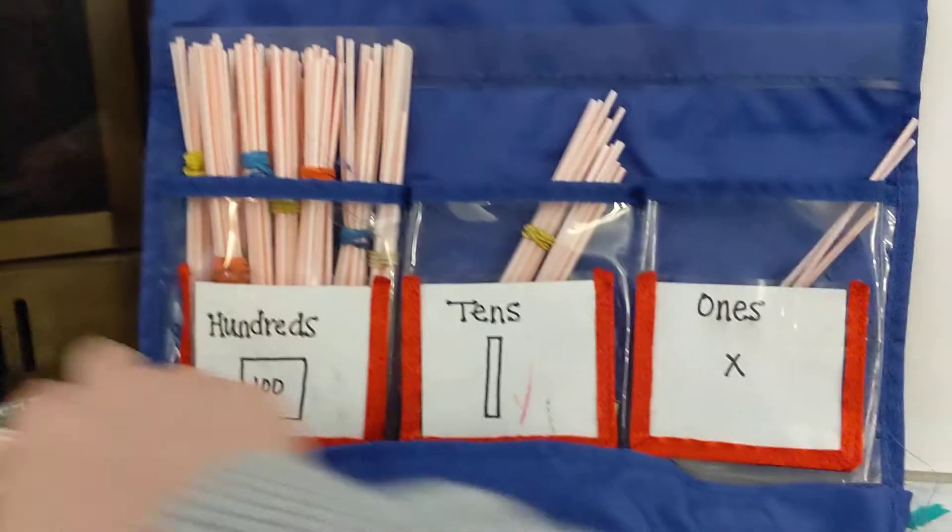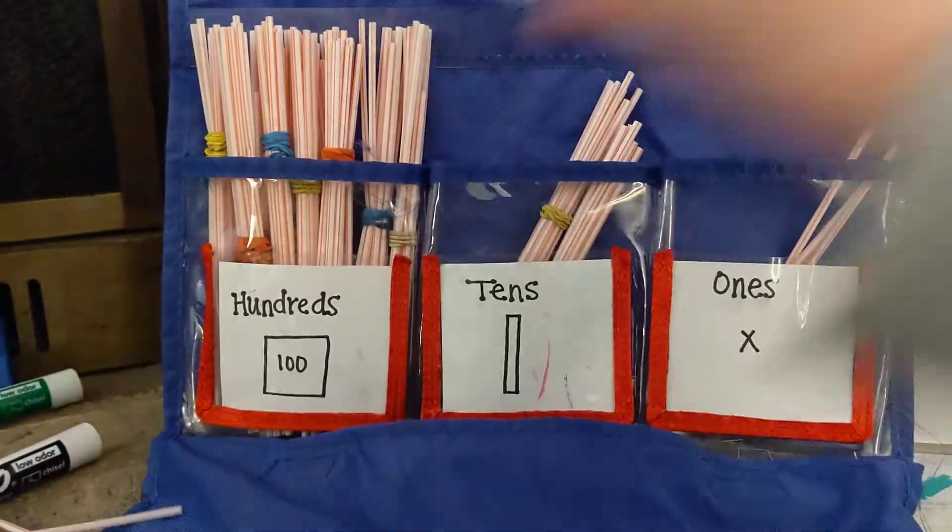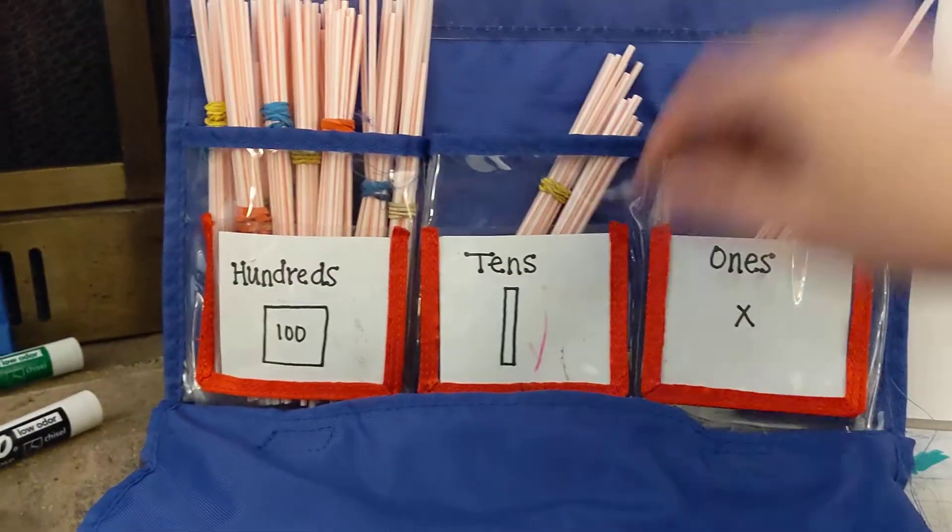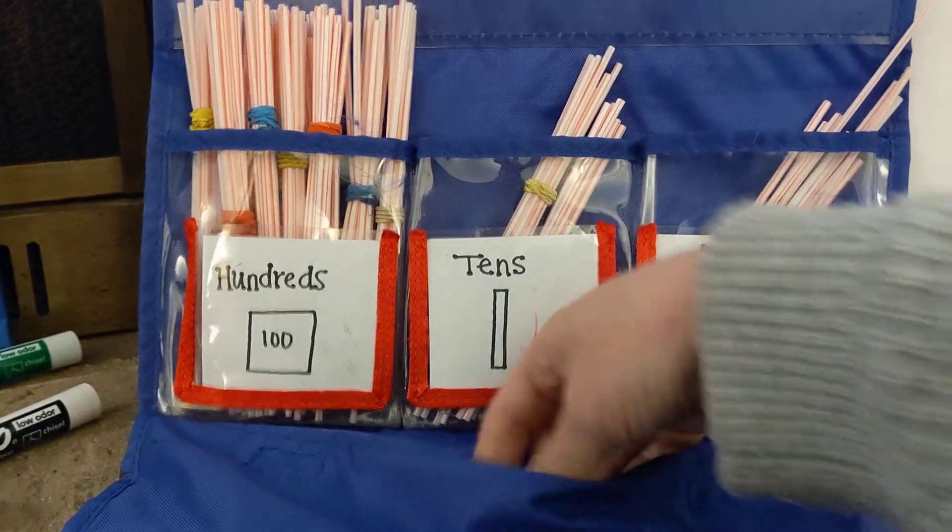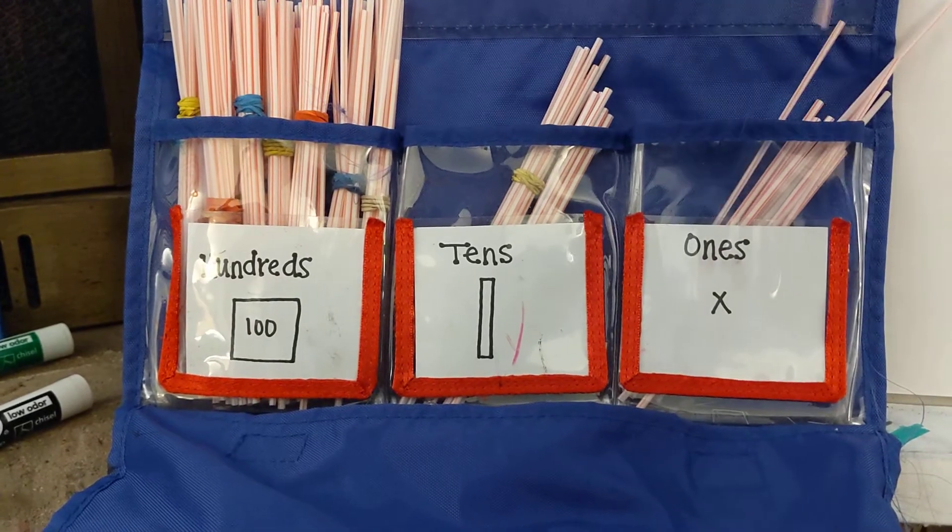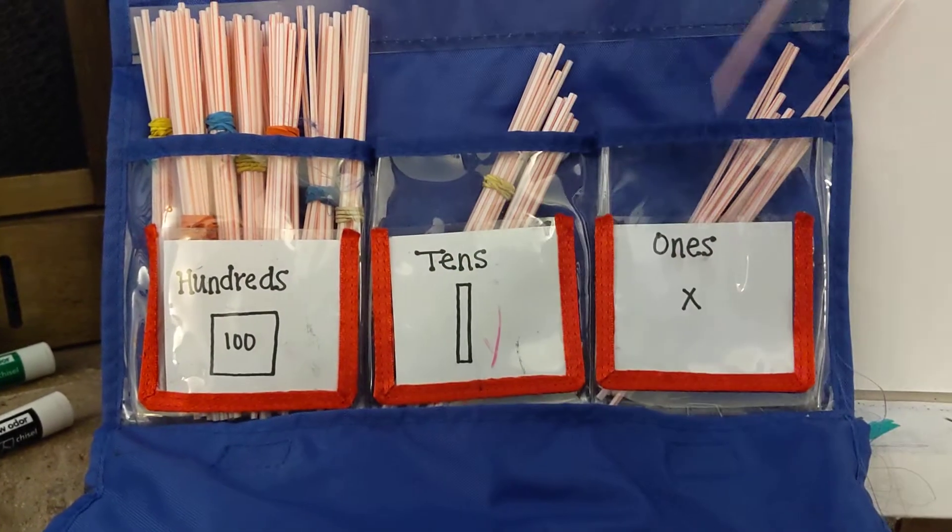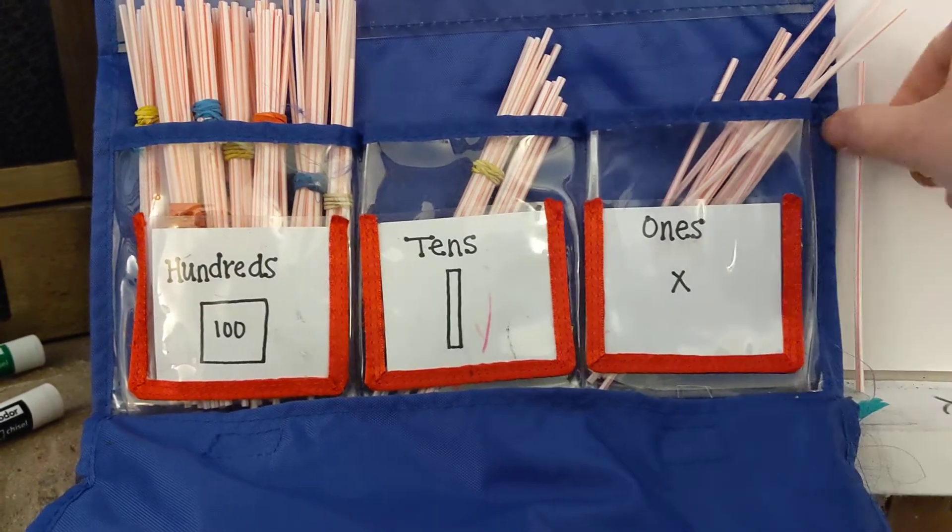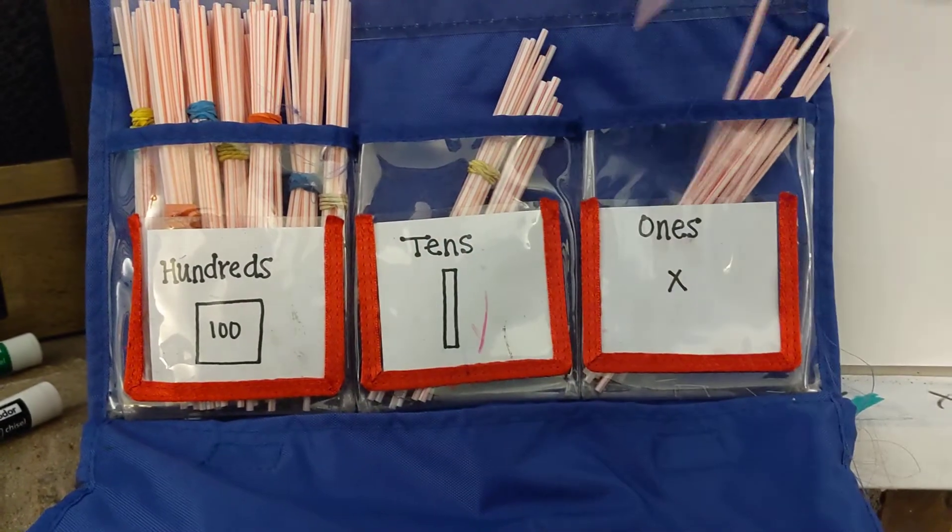So let's go ahead and start counting. One hundred twenty-three, one hundred twenty-four, twenty-five, twenty-six, twenty-seven, twenty-eight, twenty-nine, thirty, thirty-one, thirty-two, thirty-three, thirty-four, thirty-five, thirty-six, thirty-seven.